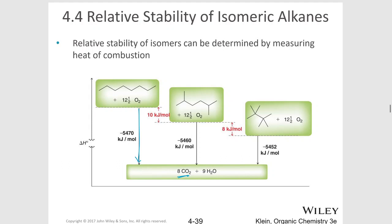This isomer which has two methyl groups — so it's slightly branched — is 2,3,4,5-dimethylhexane, an isomer of octane, and it gives off 5,460 kilojoules per mole. This next isomer, which is more highly branched, gives off 5,452 kilojoules per mole.